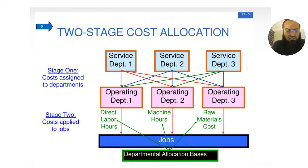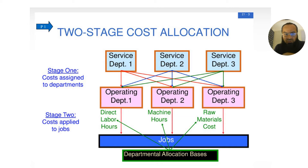Recall the two-stage allocation that you would be aware of from your management accounting studies. In an organization there are some service departments and some operation or production departments. Service departments provide services to the production departments, and production departments are those from which the physical product is manufactured. All costs applicable to manufacturing have to eventually go to different jobs or products. So costs are allocated from the service department to the production department, and then from the production department to the products.